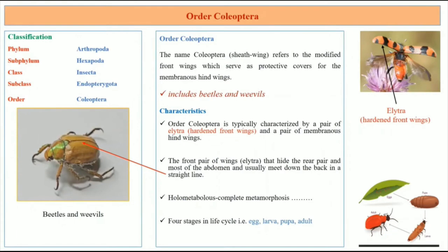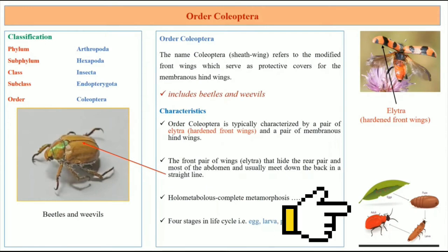The front pair of wings, called elytra, hide the rear pair and most of the abdomen, and usually meet down the back in a straight line. It undergoes holometabolous complete metamorphosis with four stages in the life cycle: egg, larva, pupa, and adult stage.